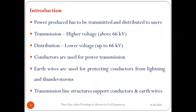Power plants produce power and this power has to be transmitted to the end users. In the process of transmission, we use transmission lines. The process of transmitting power from one end to the end user is called transmission and distribution. Normally, transmission refers to higher voltages — in the Indian scenario, transmission lines range from 66 kV to 1200 kV, and distribution systems are voltages less than 66 kV.